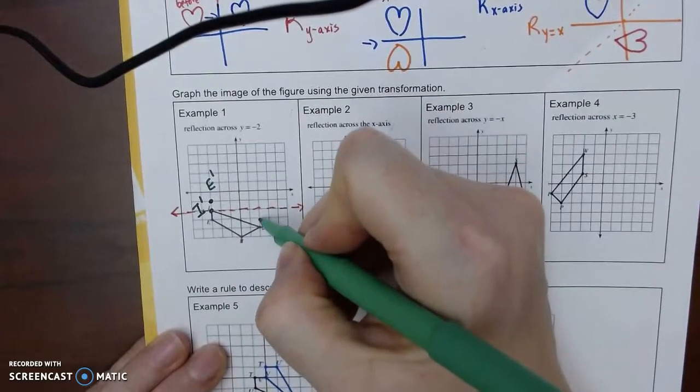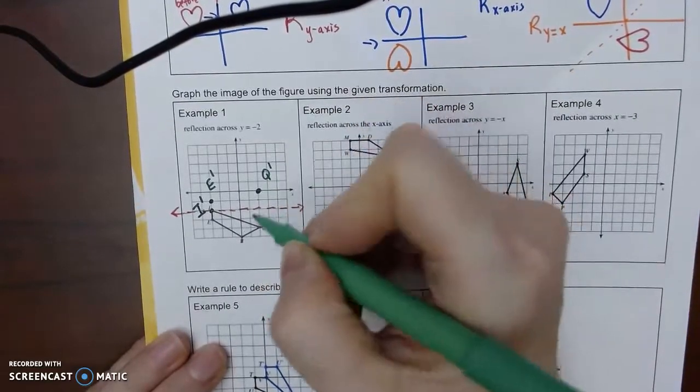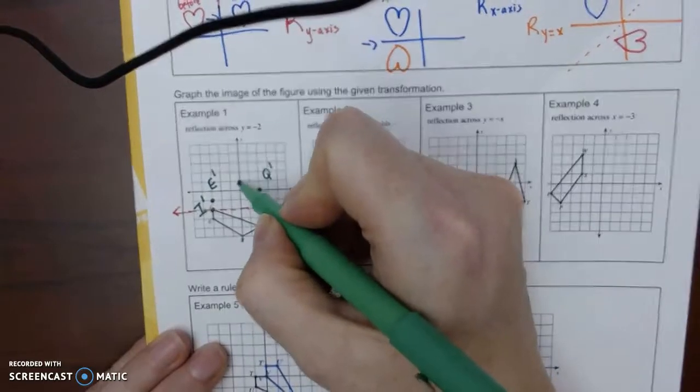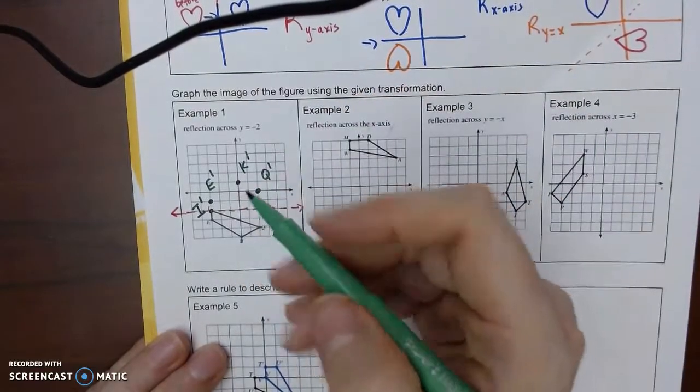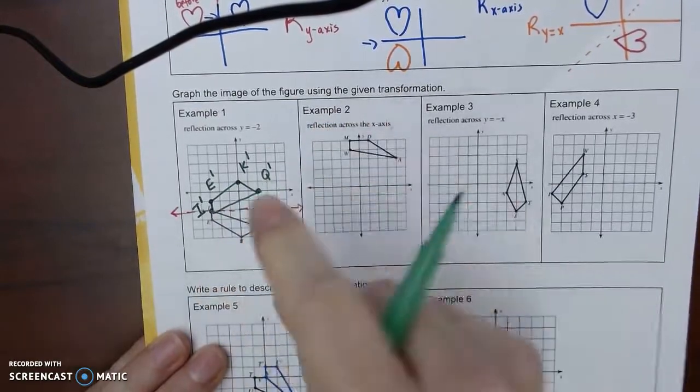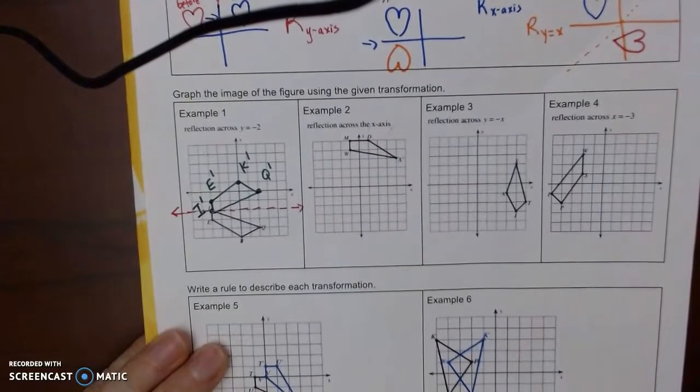And then Q, it's two away, so I'm going to go two up. So the grid really makes it pretty easy. That was three down, so we're going to go three up. We're going to let that be K. So then I'm going to connect my dots. Okay, so if you can count the spaces, it doesn't take a whole lot of imagination.